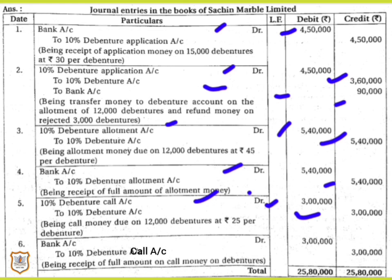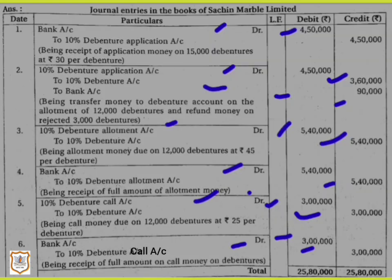On receipt of call money: Bank Account is debited by rupees 3,00,000, and 10% Debenture Call Account is credited by rupees 3,00,000. Narration: being receipt of full amount of call money on debentures.